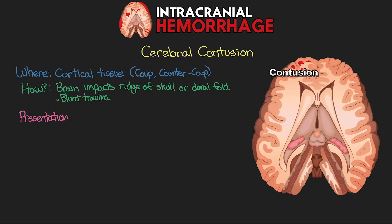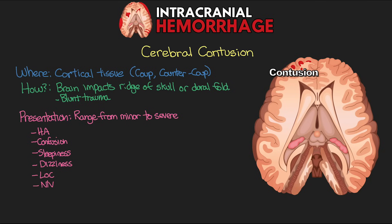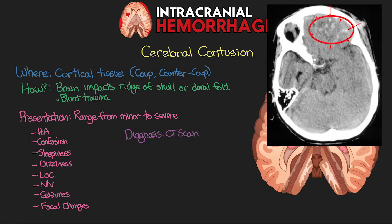Presentation ranges from minor to severe contusion, but includes headache, confusion, sleepiness, dizziness, loss of consciousness, nausea, vomiting, seizures, and focal changes based on the location of the contusions. On head CT we see ill-defined hypodense areas mixed with foci of hemorrhage, which can be adjacent to traumatic subarachnoid hemorrhage. On follow-up scans at 24 to 48 hours, these can progress into more rounded hematomas.